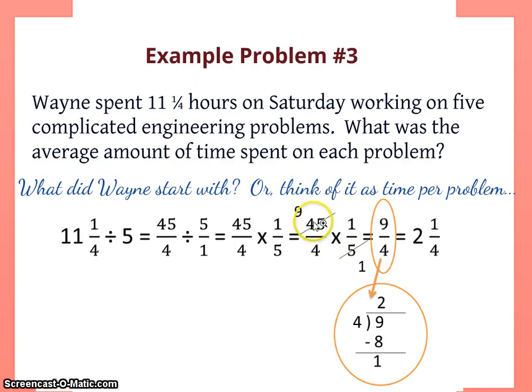So my problem becomes 45 over 4 times 1 fifth. I can cross cancel anything that I want. This is a nice neat little problem. 5 is a factor of 45, so I can simply divide 5 out of both of them. 45 divided by 5 is 9, 5 divided by 5 is 1. Then I can multiply straight across: 9 times 1 is 9, 4 times 1 is 4.